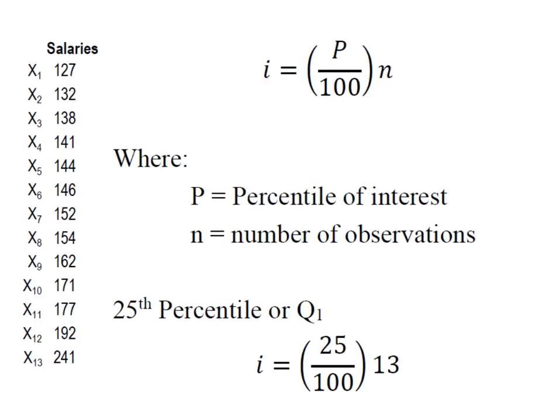Let's look at another. So, now let's look for the 25th percentile. Remember, the 25th percentile is the same thing as Q1. There are four quarters in a dollar. So, one quarter is equal to 25 percentiles.